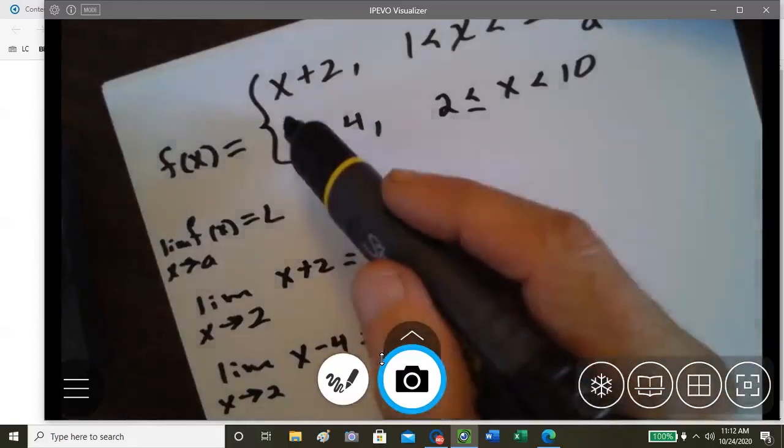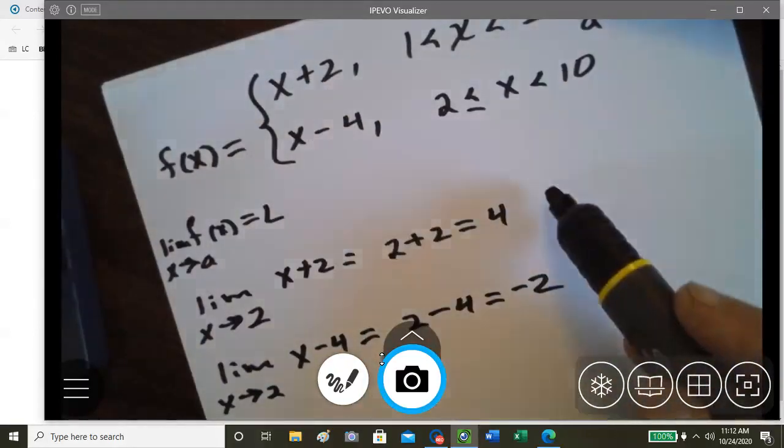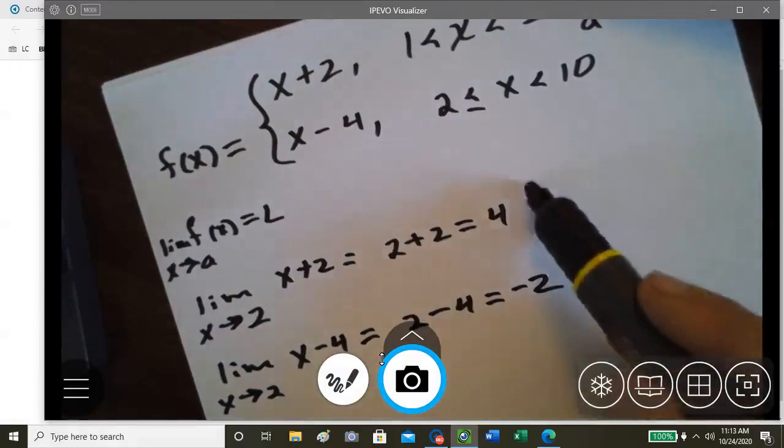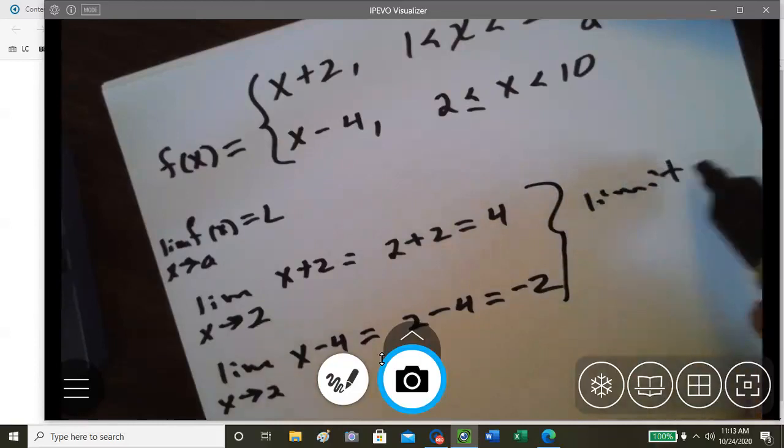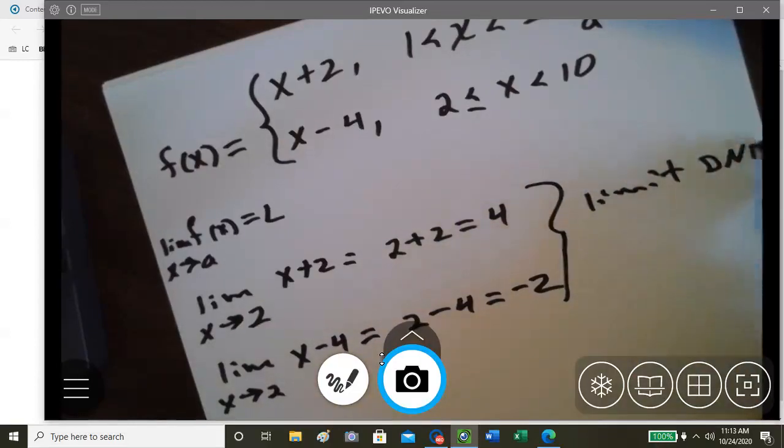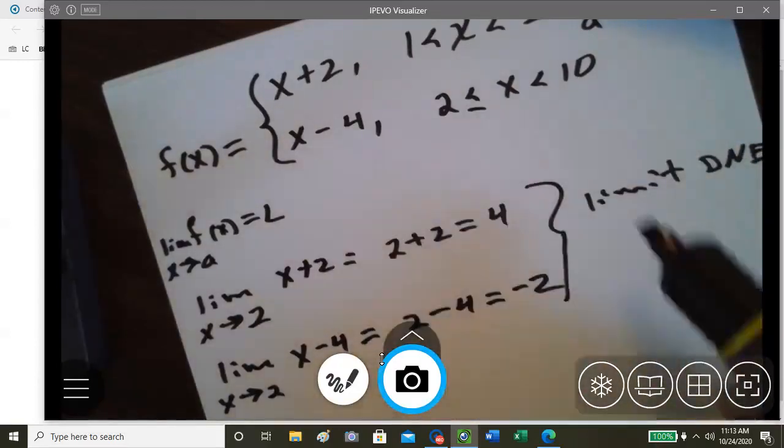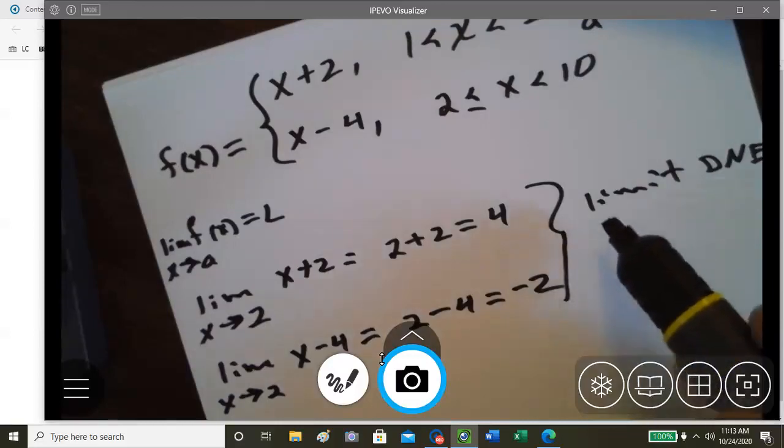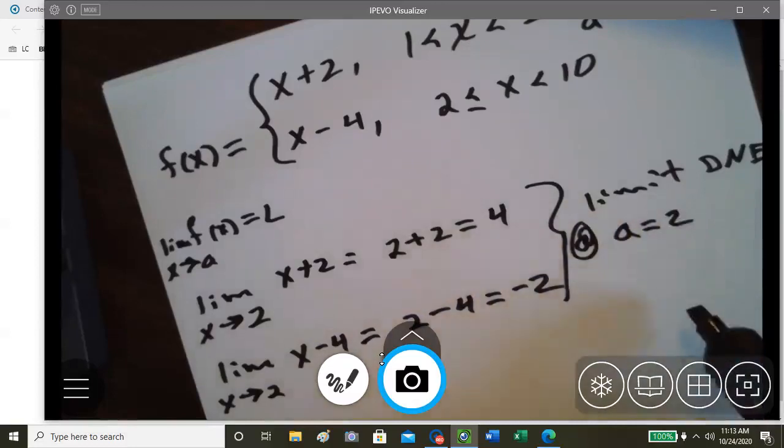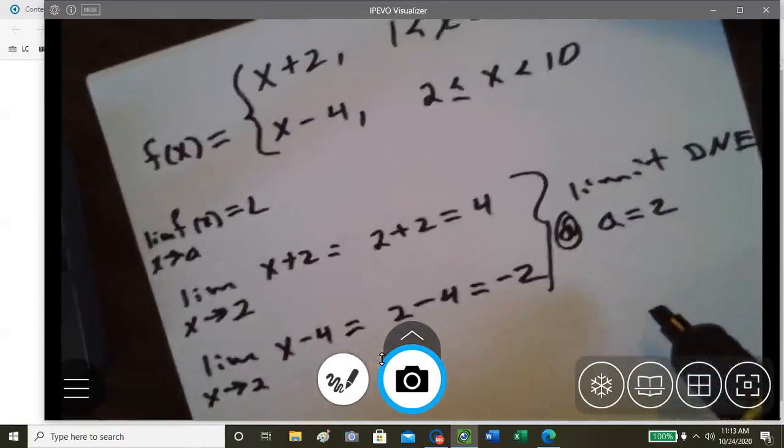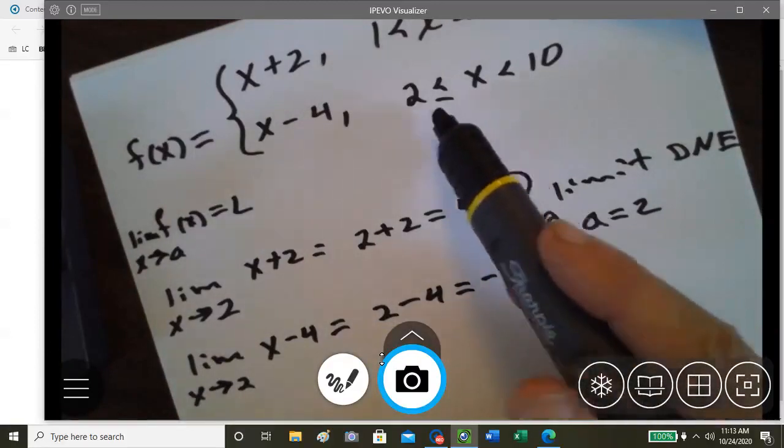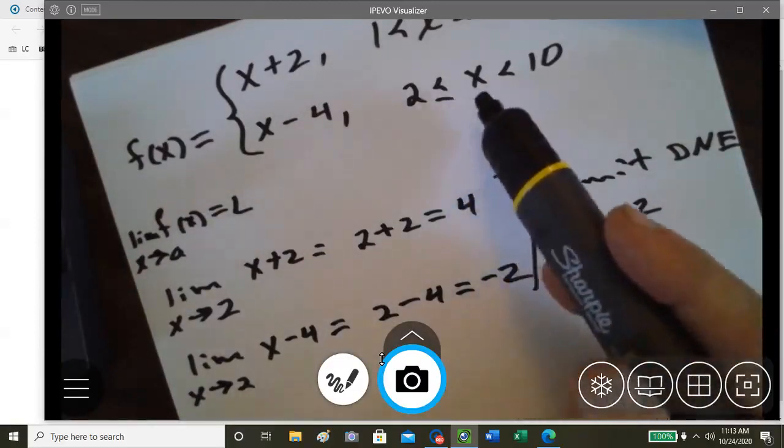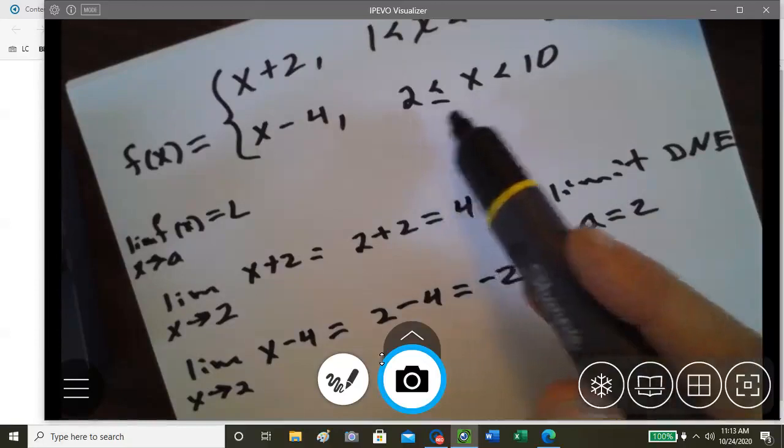So from this we can say that the limit does not exist for the piecewise defined function at a equals 2. So we look at where our interval is. This interval here is open at 1 and open at 2.